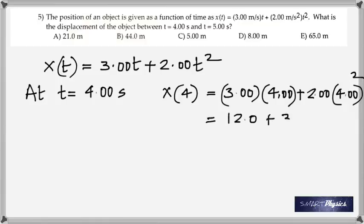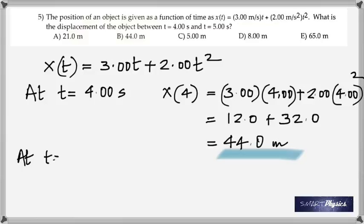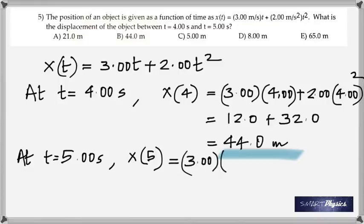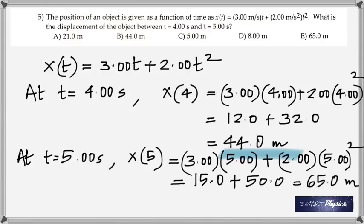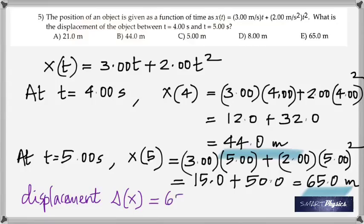For t = 4: x = 12.0 + 32 = 44.0 meters. For t = 5: x = 15.0 + 50.0 = 65 meters. So displacement Δx = 65 − 44 = 21 meters. You cannot give direction here since nothing is mentioned about it.